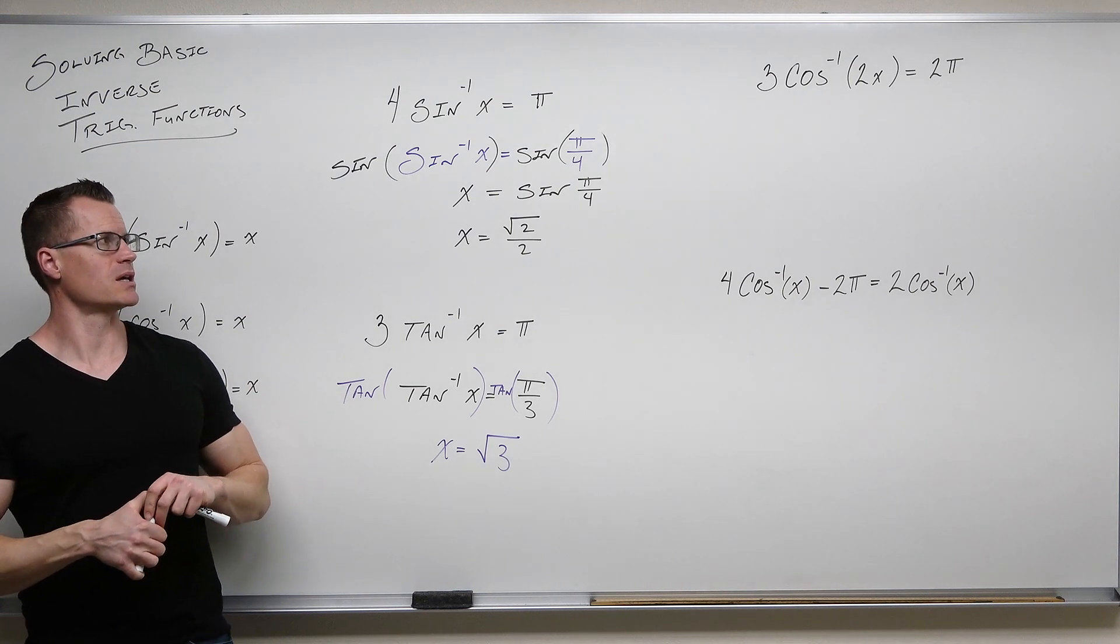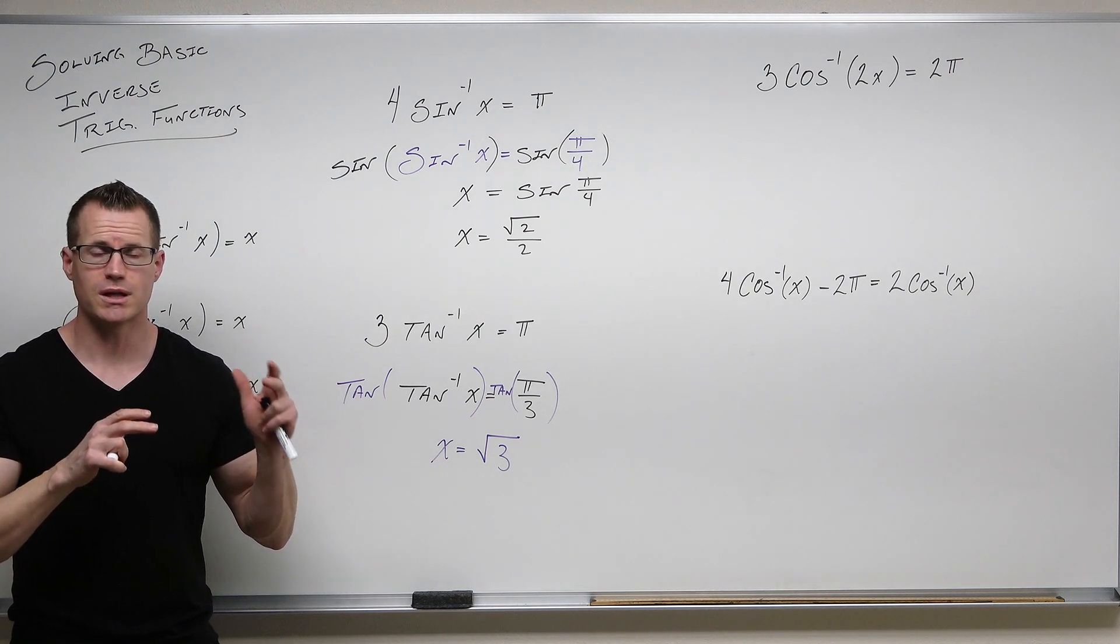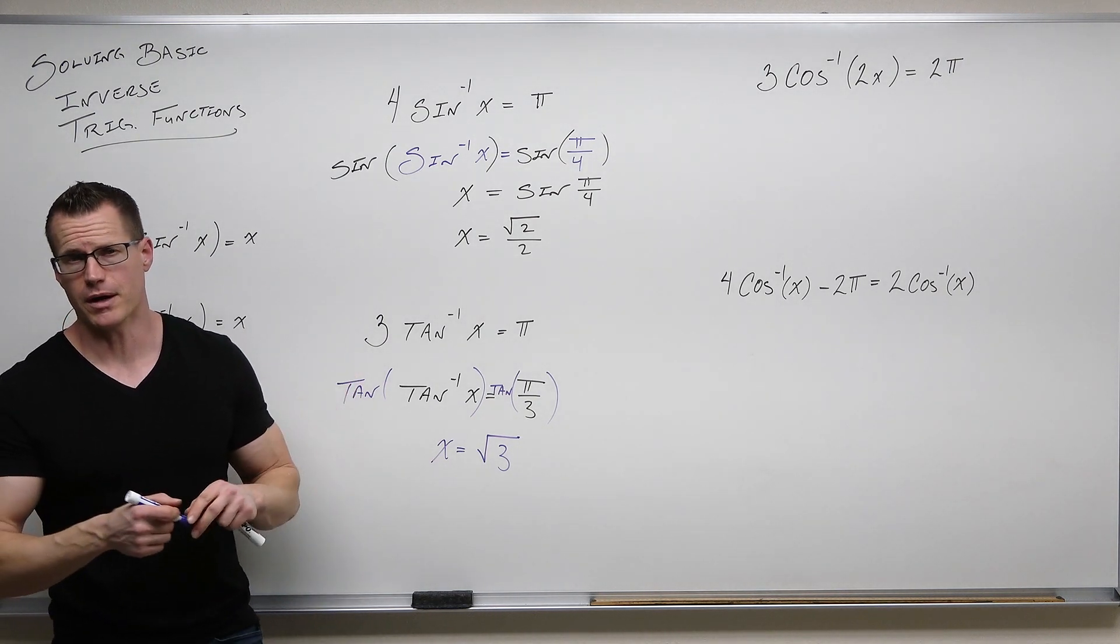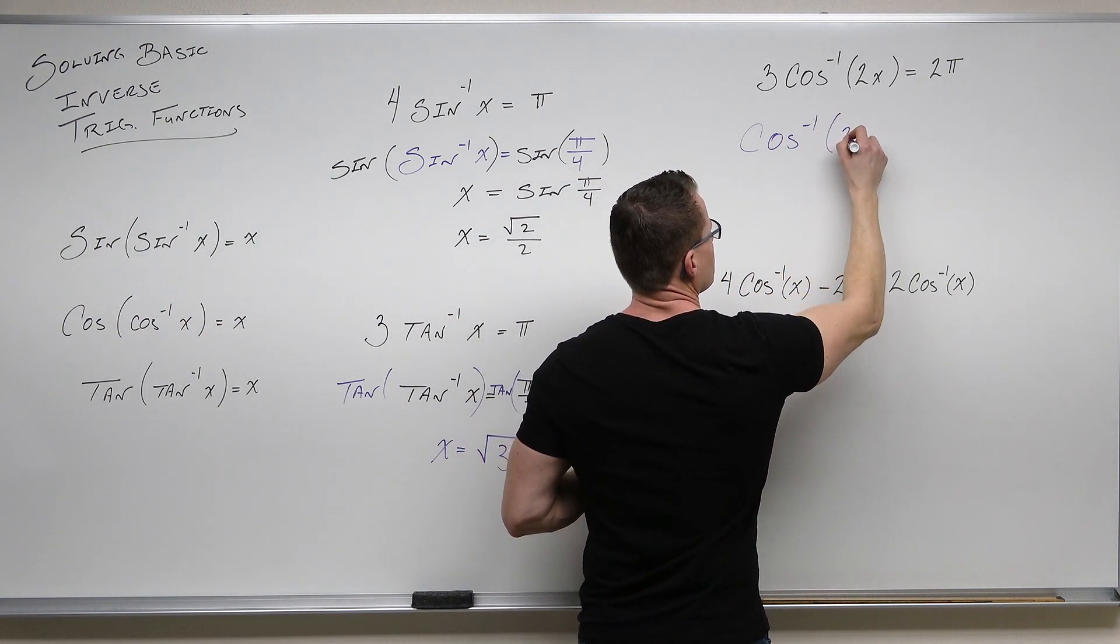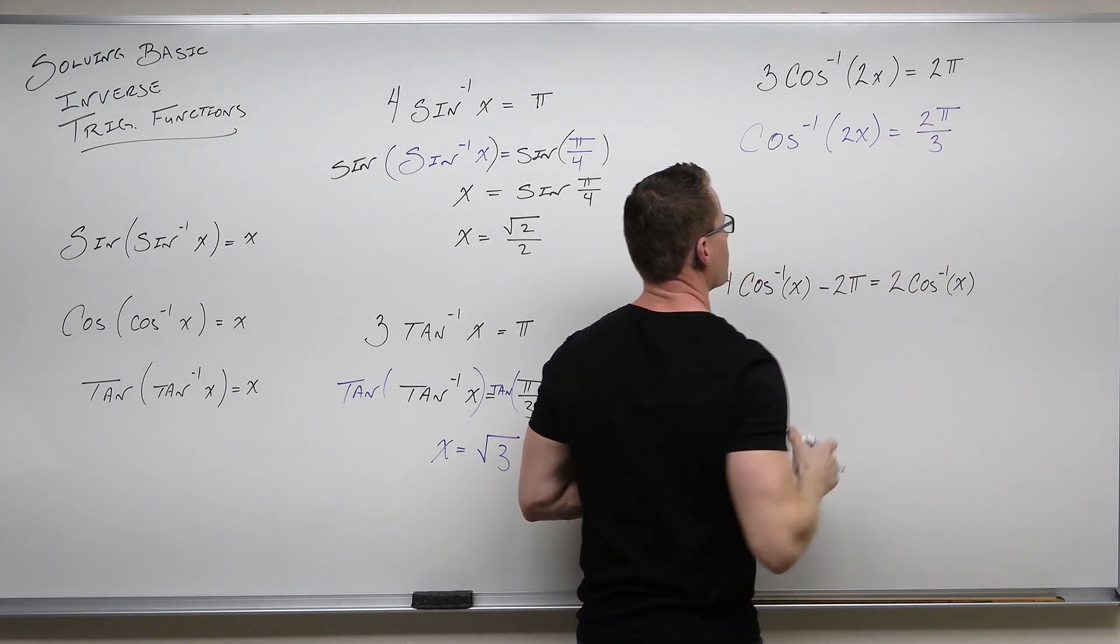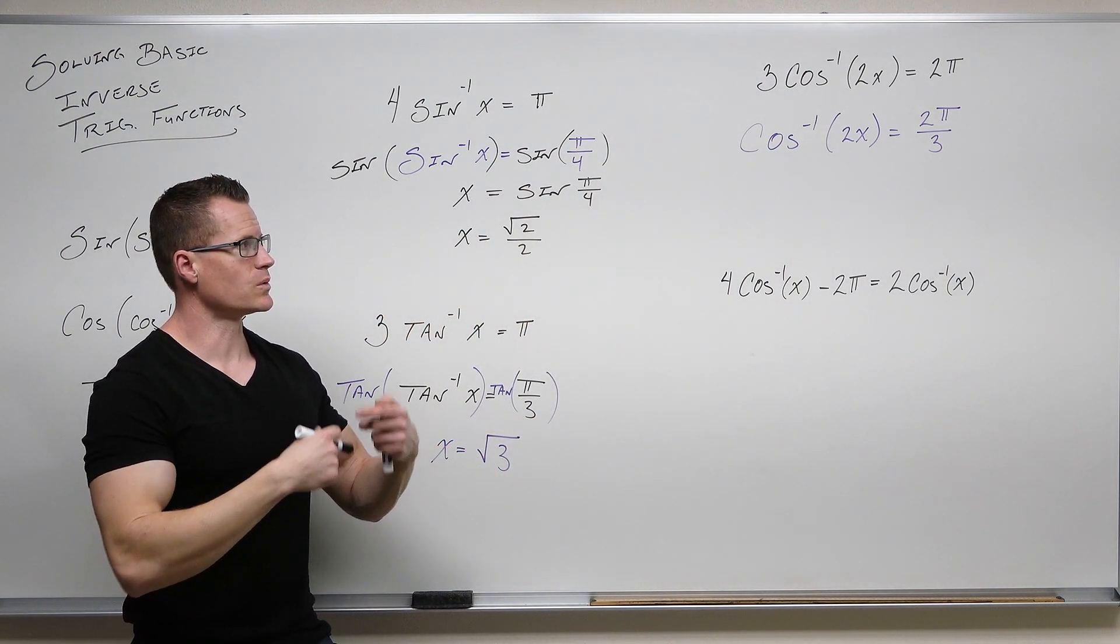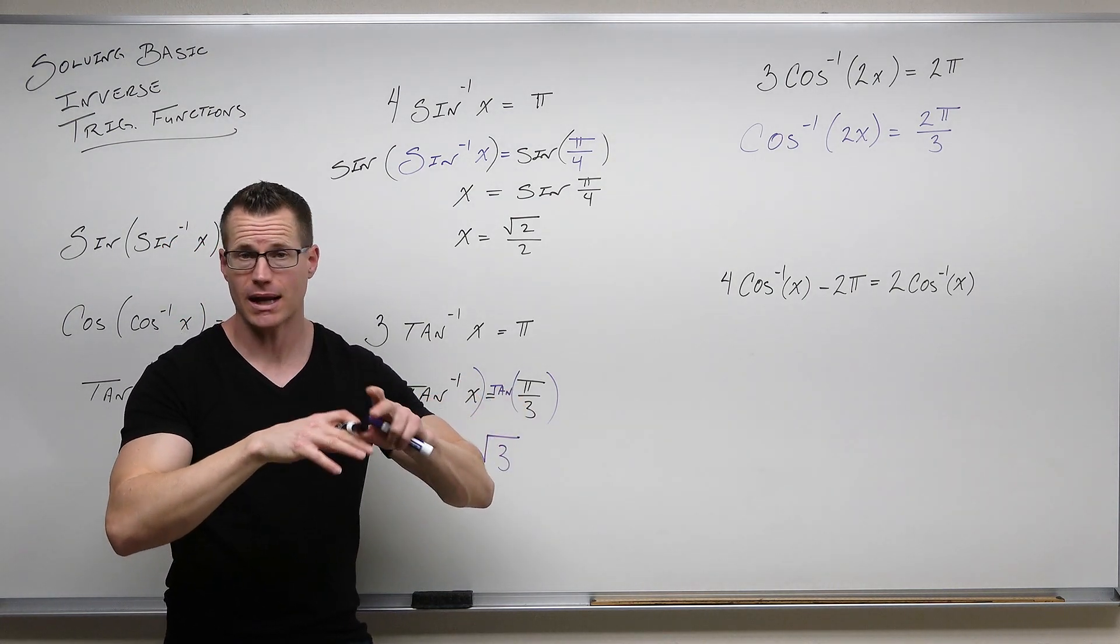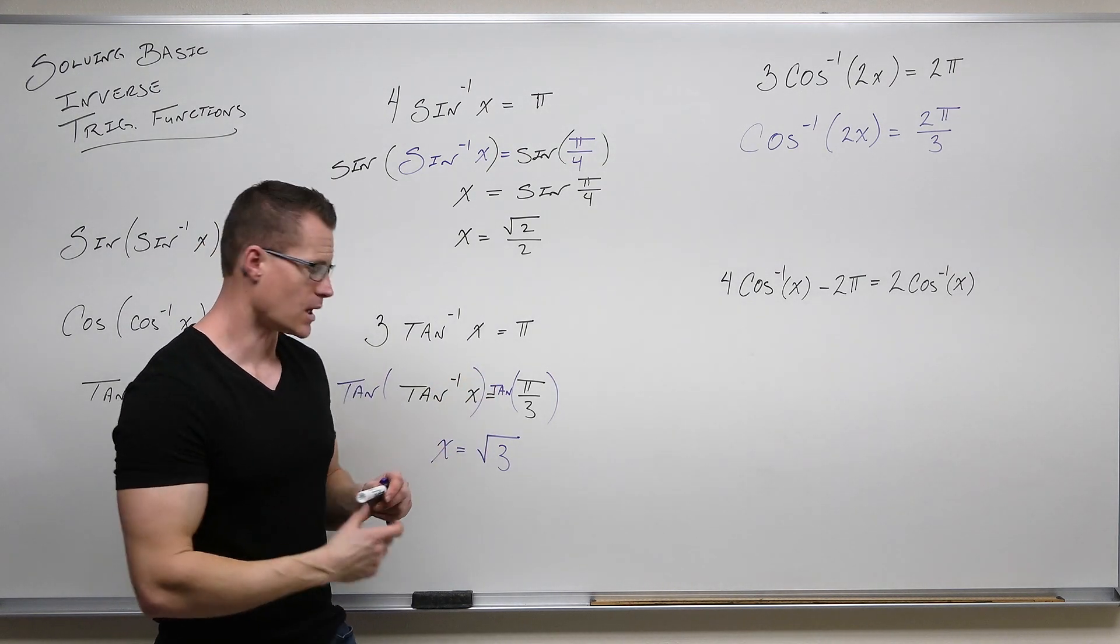Let's move on. So 3cos⁻¹(2x) = 2π. It looks a little bit more difficult, but remember the idea: isolate the function that contains your variable, then use an inverse function. So we're simply going to divide by three here. Once we've done that, cos⁻¹(2x) = 2π/3. Well, we've got to get at that 2x, but we get it. We have to undo that function hanging around it. We can't divide and multiply. We've got to use cosine on both sides.